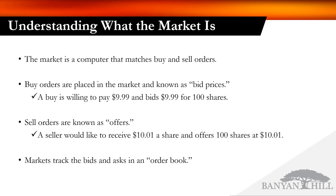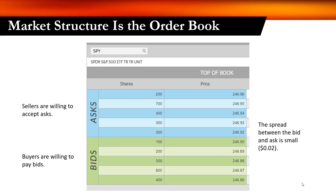This is what an order book looks like. We have two key pieces of information: the number of shares and the price. The difference between the best bid and the best ask is $0.02 — that's known as the spread. Spreads are often small. This is on SPY, a very liquid ETF that tracks the S&P 500. It shows us what sellers are willing to accept and what buyers are willing to pay. This is a snapshot in time — these numbers change frequently for a variety of reasons.